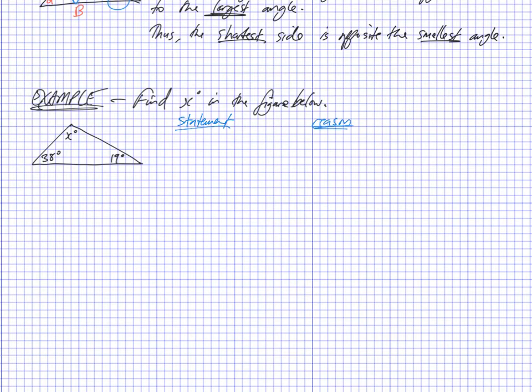So what's my statement? X degrees plus 38 degrees plus 19 degrees is going to equal 180 degrees. Why? Because angles in a triangle equal 180 degrees. This is clearly a triangle. It's got three angles in it. And I know, according to special properties, that the interior angles of a triangle add up to 180.